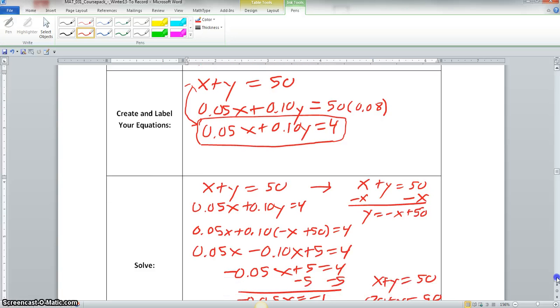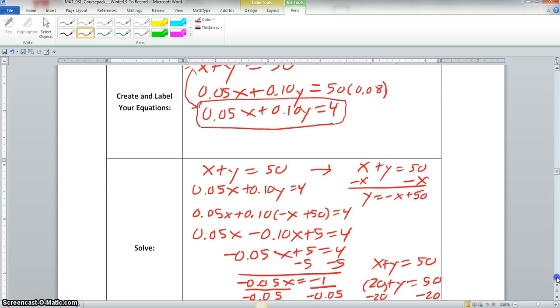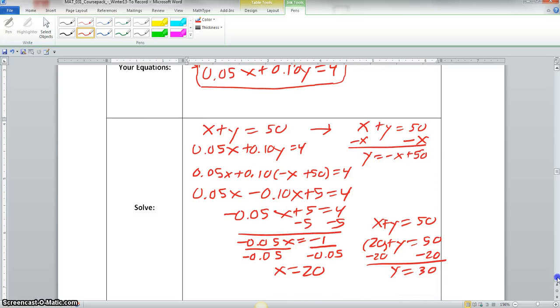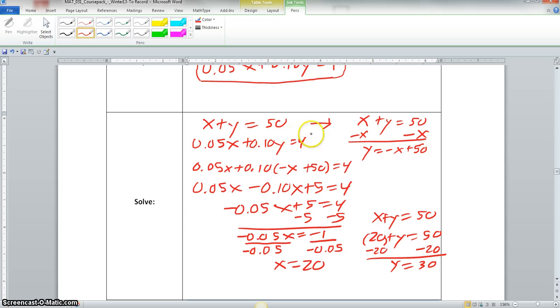Now I choose to use the substitution method. So what I would do here is I would take that top equation and subtract x from both sides. So when I do that, I would end up with y equals negative x plus 50. So I will replace the y in this equation here with negative x plus 50.